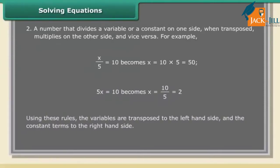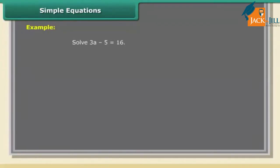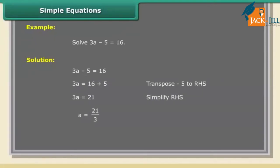Simple equations example: solve 3a − 5 = 16. Solution: 3a − 5 = 16. Transposing −5 to RHS: 3a = 16 + 5 = 21. Transposing 3 to RHS: a = 21/3 = 7.